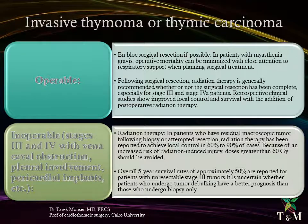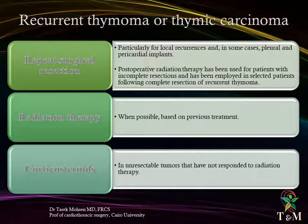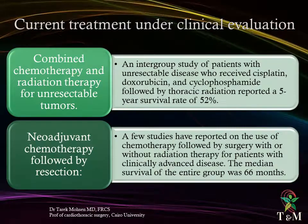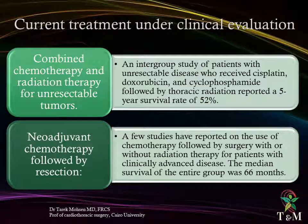For recurrent thymoma or thymic tumors, options include repeat surgical resection, radiation therapy based on previous treatment, and corticosteroids if the tumor is not resected or has not responded to radiation therapy. Current treatments under clinical evaluation include combined chemotherapy and radiation therapy for non-resectable tumors, which has achieved a 5-year survival rate of 52%. Neoadjuvant chemotherapy followed by resection: few studies have reported on chemotherapy followed by surgery with or without radiation therapy for patients with clinically advanced disease, with a median survival of 66 months for the entire group.